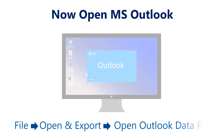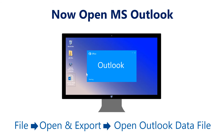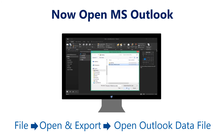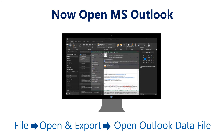Open Microsoft Outlook and click the file option from the menu bar, then select open and export. Select open Outlook data file, then browse your output PST file and click OK. Now you can view your output PST file data in Outlook.